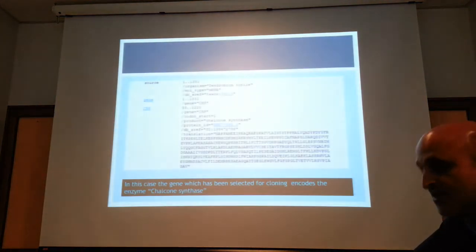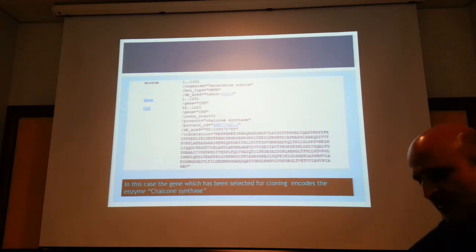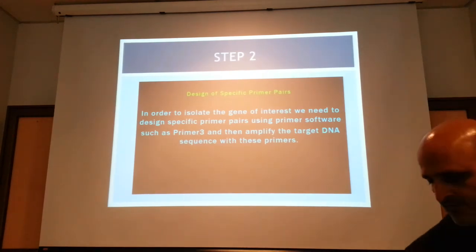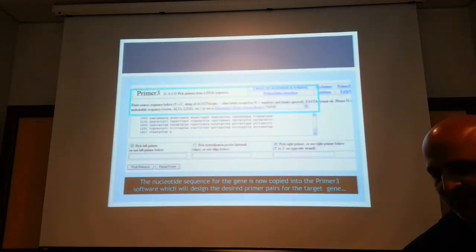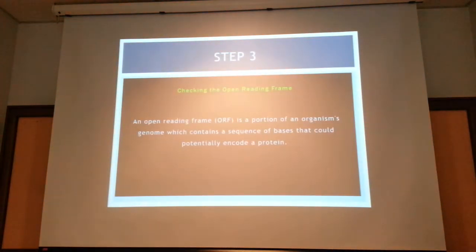The first step is to isolate your gene of interest — refer to GenBank, download a sequence, and design a primer. Once you design your primers you can order them and isolate your gene of interest, then ligate it onto your vector. The third step is to ensure that your open reading frame is intact — the DNA sequence must be correct such that each codon triplet encodes the correct amino acid.